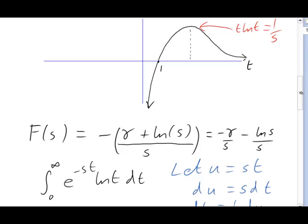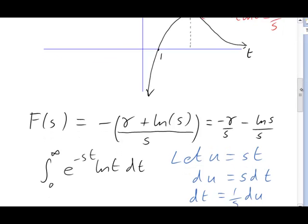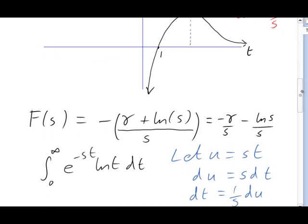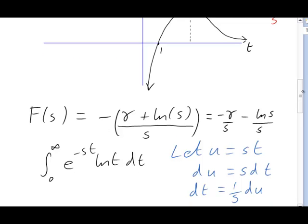In making the change of variables, we'll have to substitute for dt, so we'd better solve for it and write dt equals 1 over s du. Now what about the limits? When t is 0, that's the bottom limit, u is also 0. When t gets very big and positive, assuming as we did that s is also positive, that means that u gets big and positive. So actually the limits on the integral will stay the same.